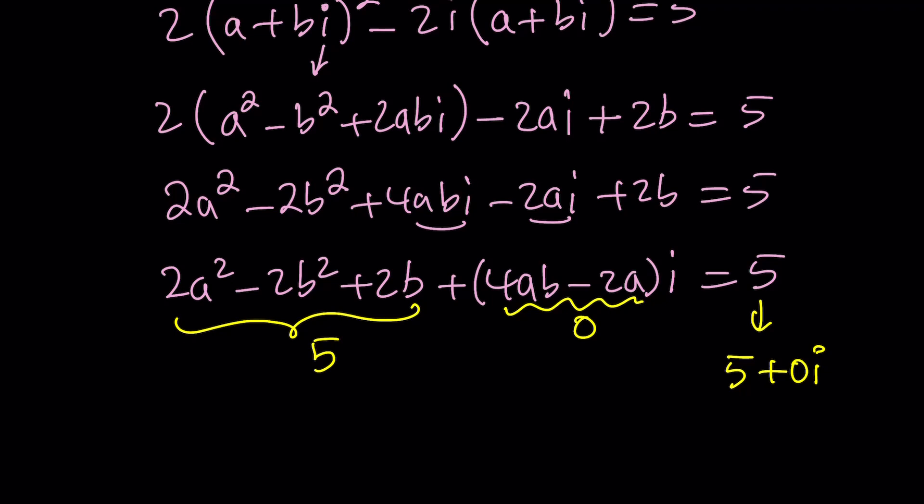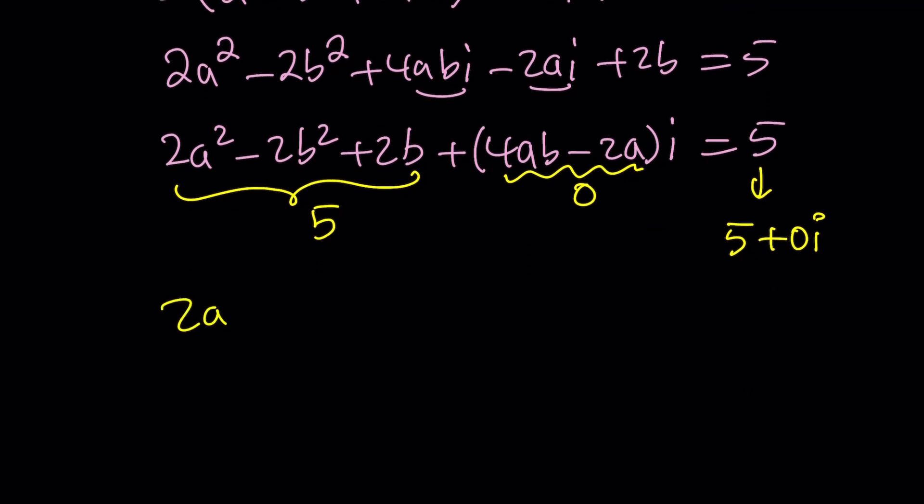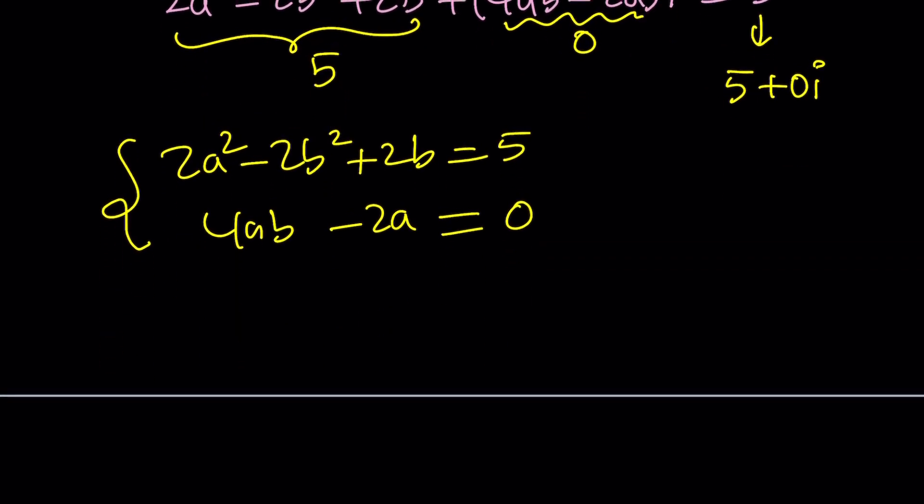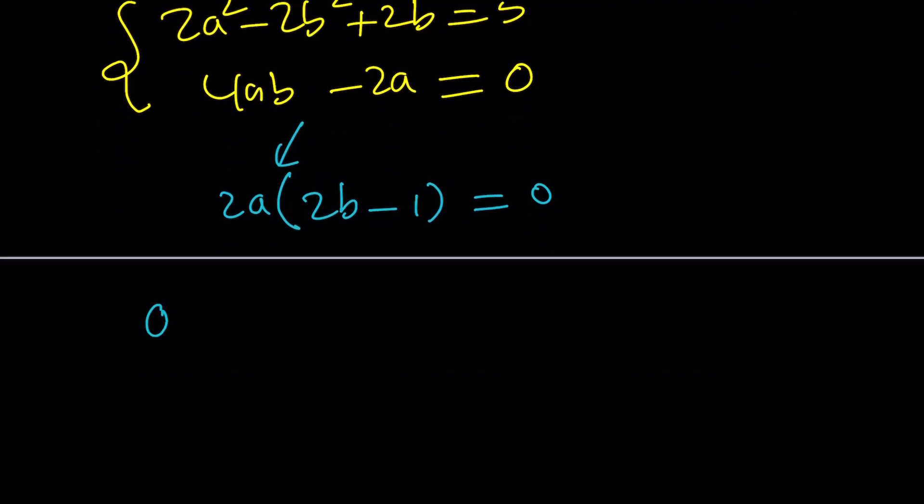So let's go ahead and solve this as a system. We get 2a squared minus 2b squared plus 2b equals 5 and 4ab minus 2a equals 0. So this is a system of equations and it's quadratic and there are two variables. So we should be able to solve this for a and b. But let's start with the second equation because it's a little easier. So let's go ahead and factor out 2a here, we get 2b minus 1 equals 0. And this gives us two things, either a is equal to 0 or b is equal to 1 half.